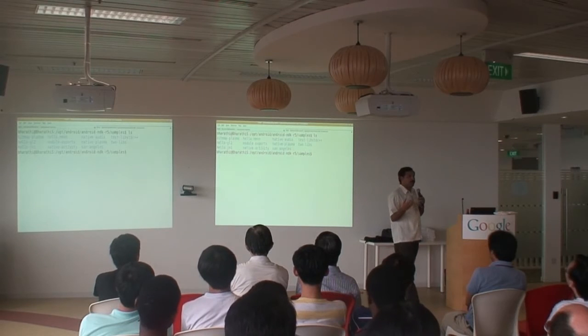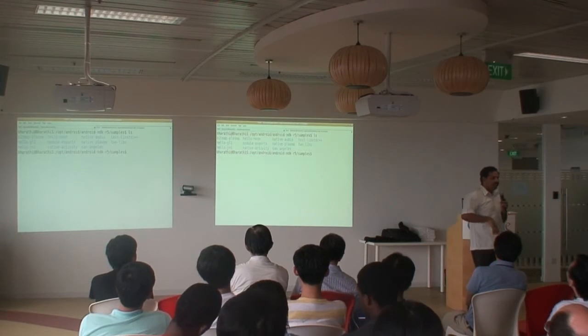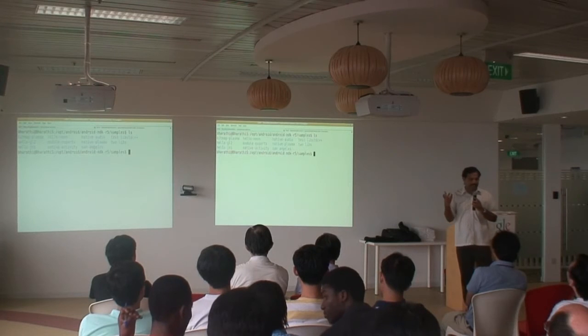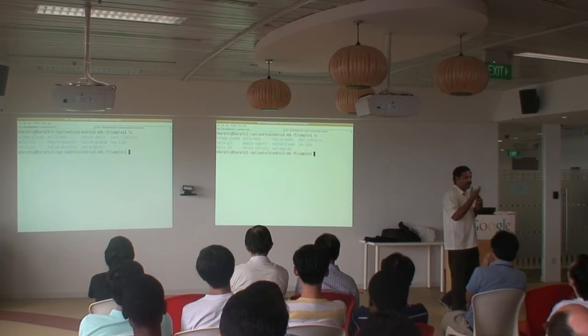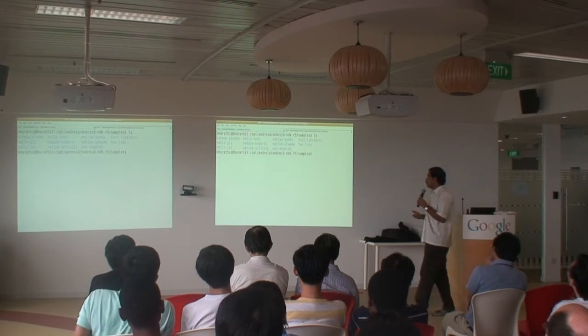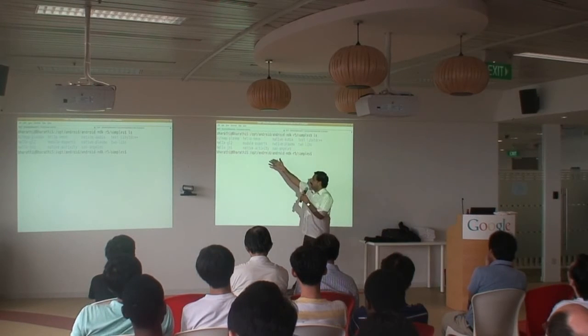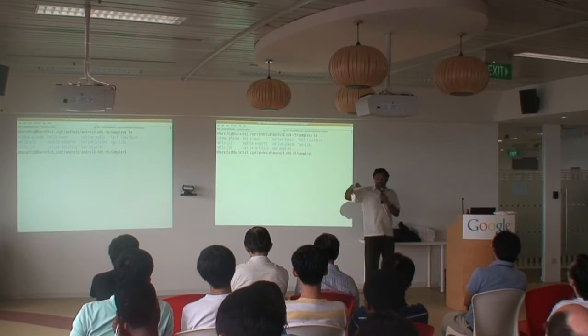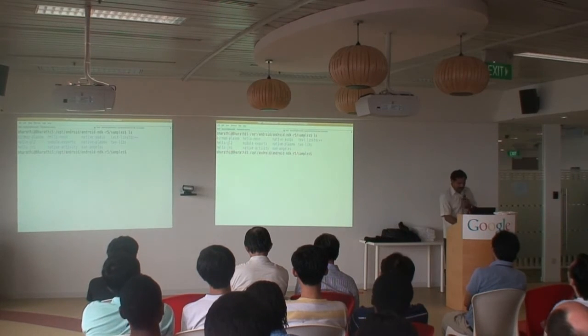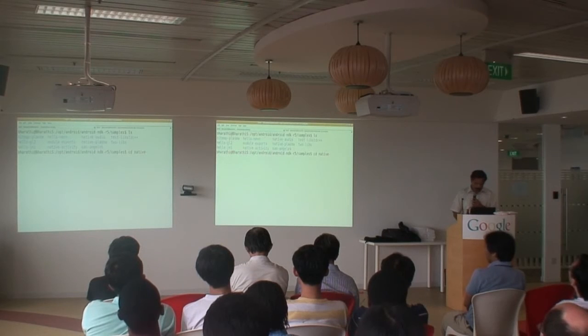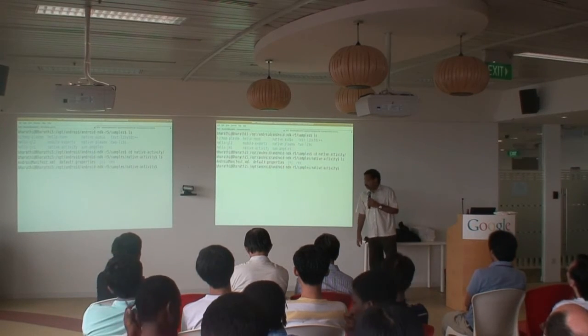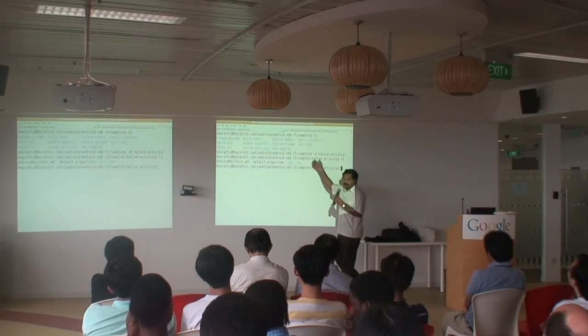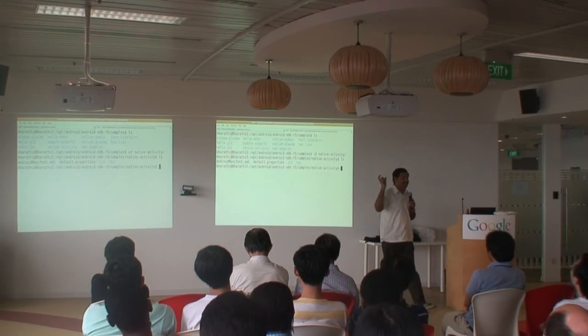In application programming, every UI component will be called as an activity. So, here, they call it as a native activity. Native activity example provides some insight on how to try to move everything to native code. Here, one important thing is missing. Source. Because everything is in C, C++. So, we don't have that source folder. But still, we need to provide the Android manifest file, and the default property. Both is mandatory.